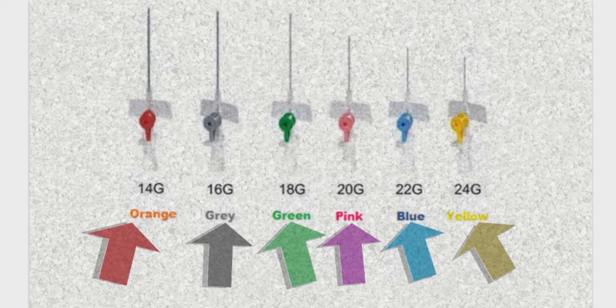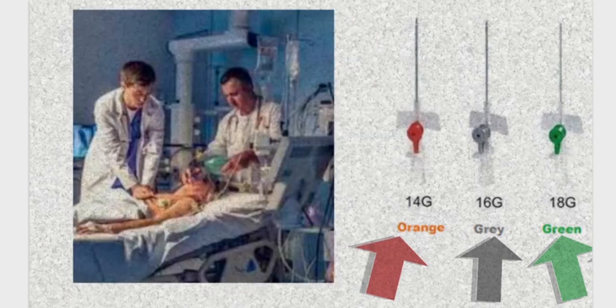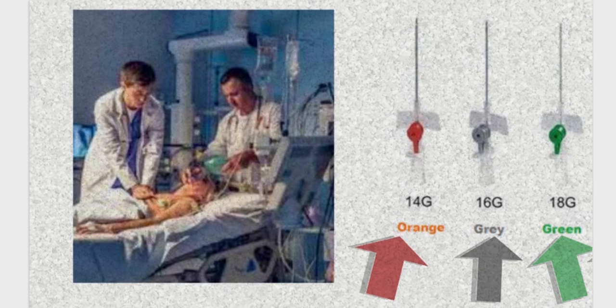Size 14 and 16 are the biggest in diameter on this list, and they are used for rapid fluid replacement and rapid blood transfusion in anemic patients, hypovolemic patients, and patients in shock.